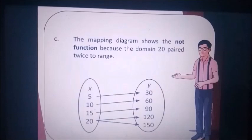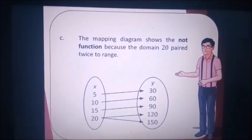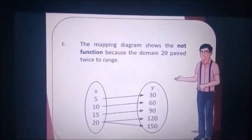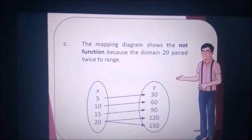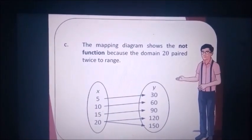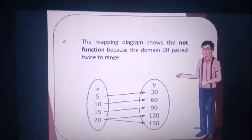In letter C, we use the mapping diagram to show that we have not a function because the domain 20 is paired twice to the range.